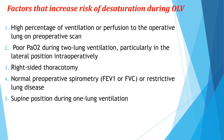Factors that increase risk of desaturation during one-lung ventilation include: high percentage of ventilation to the operative lung on pre-operative scan, poor PiO2 during one-lung ventilation particularly in the lateral position intraoperatively, right-side thoracotomy, abnormal pre-operative spirometry such as FVC or restrictive lung disease, and supine position during one-lung ventilation.